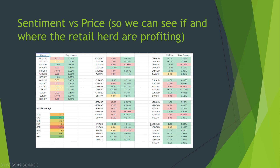The sentiment versus price tab lets us see if and where the retail herd are profiting. With the USD, they're selling it and price is going up — that's normal, good behaviour. You'd want green and green, or red and red. The pound is very mixed, so you'd avoid it completely — it's telling us the retail guys are getting paid, which would be strange. The USD is behaving; the pound is not.